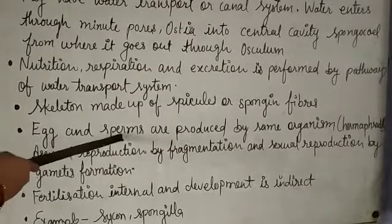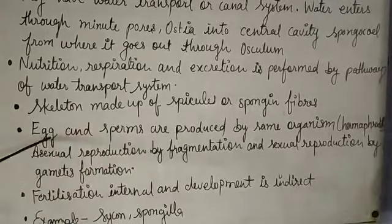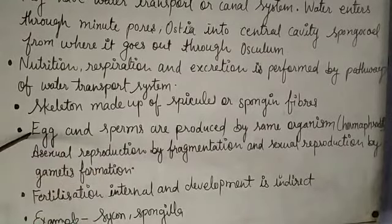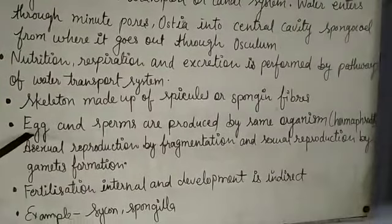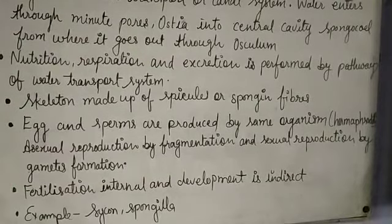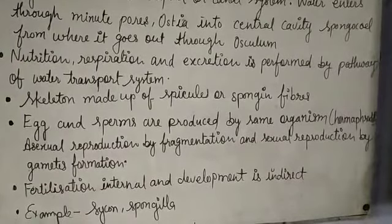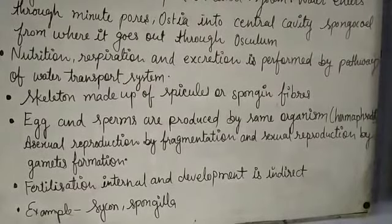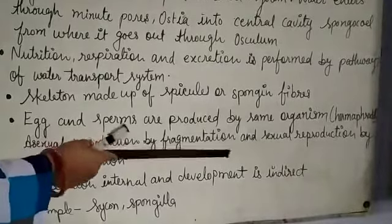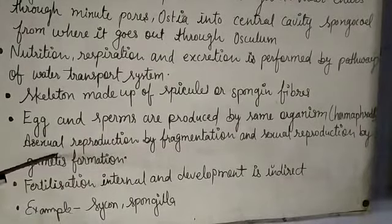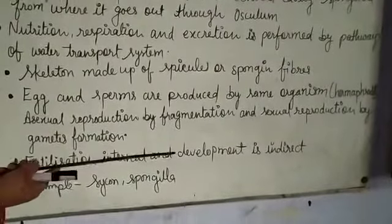Eggs and sperms are produced by the same organism. Asexual reproduction occurs by fragmentation, and sexual reproduction occurs by gamete formation. Fertilization is internal and development is indirect.